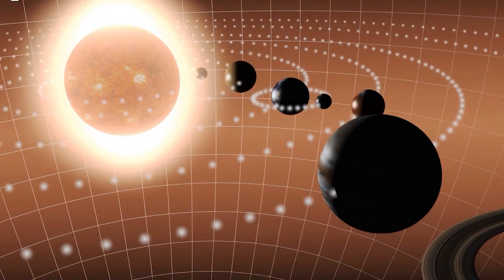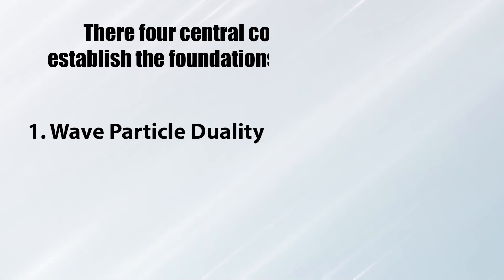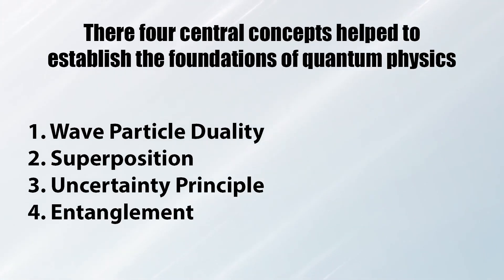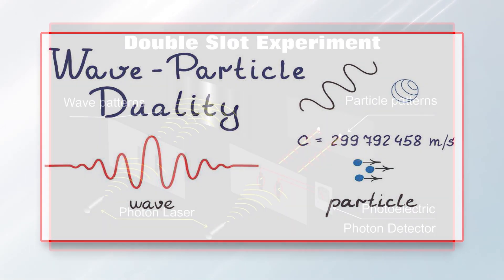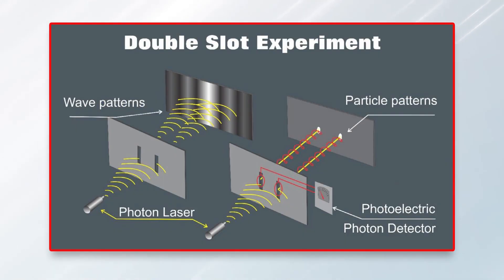By the way, there are four central concepts that help establish the foundations of quantum physics: one, wave-particle duality; two, superposition; three, uncertainty principle; four, entanglement. First, let's talk about wave-particle duality. To understand the wave-particle duality concept, we have to follow the double-slit experiment.